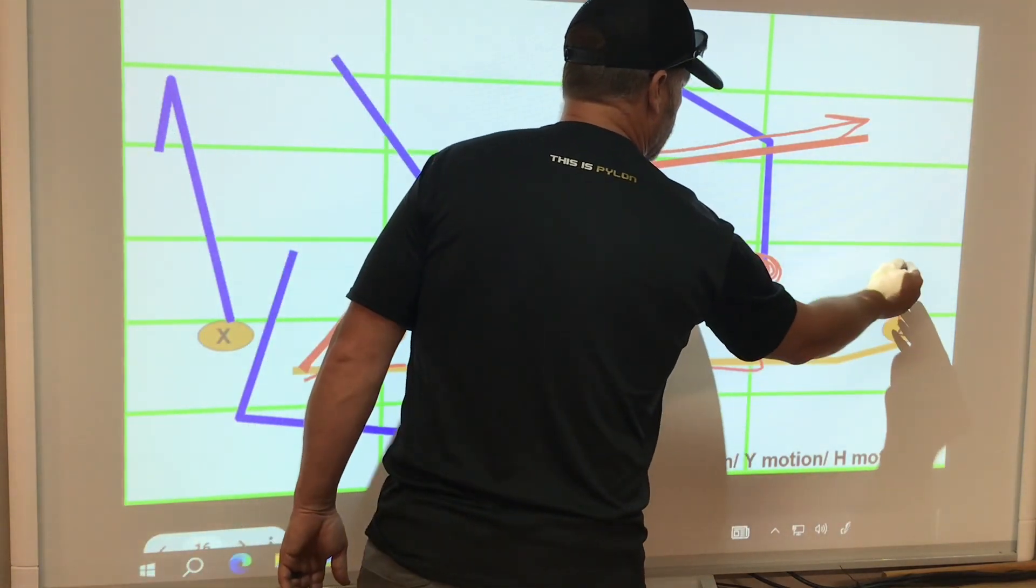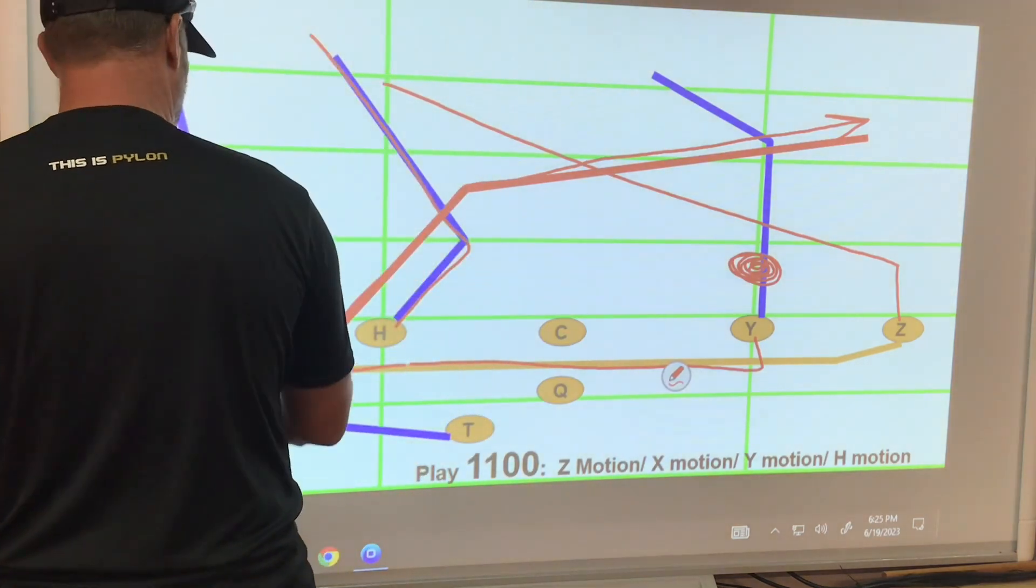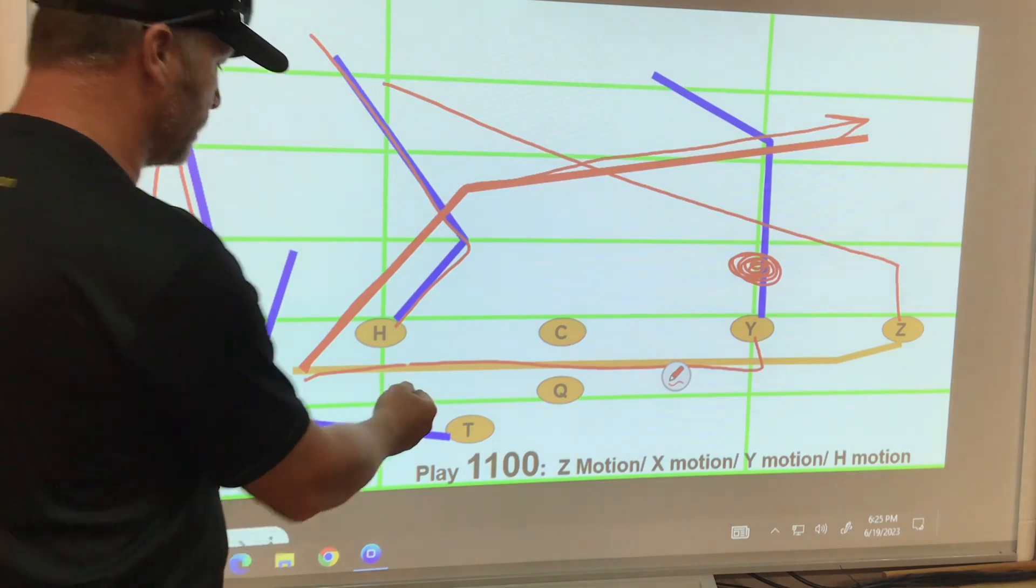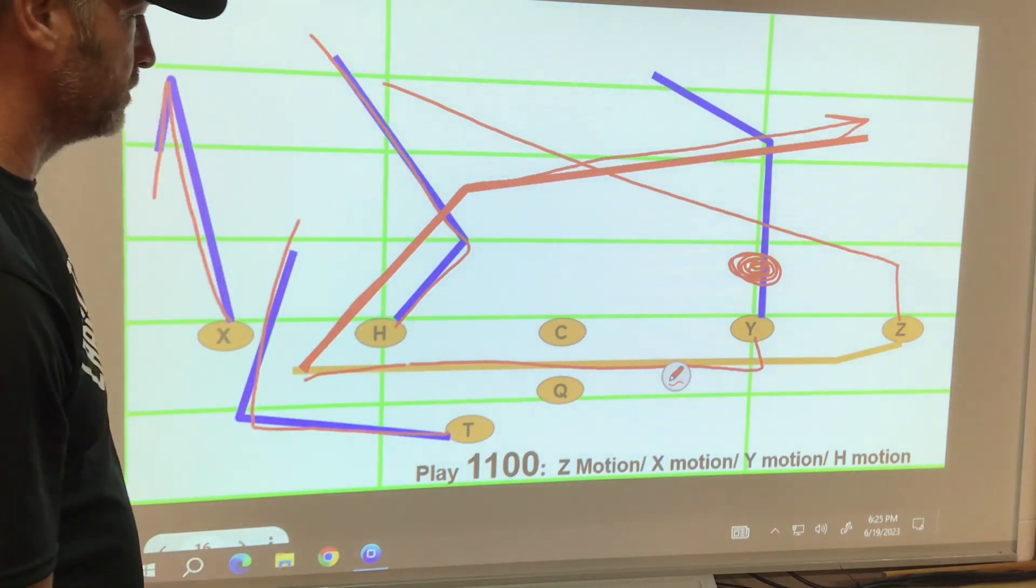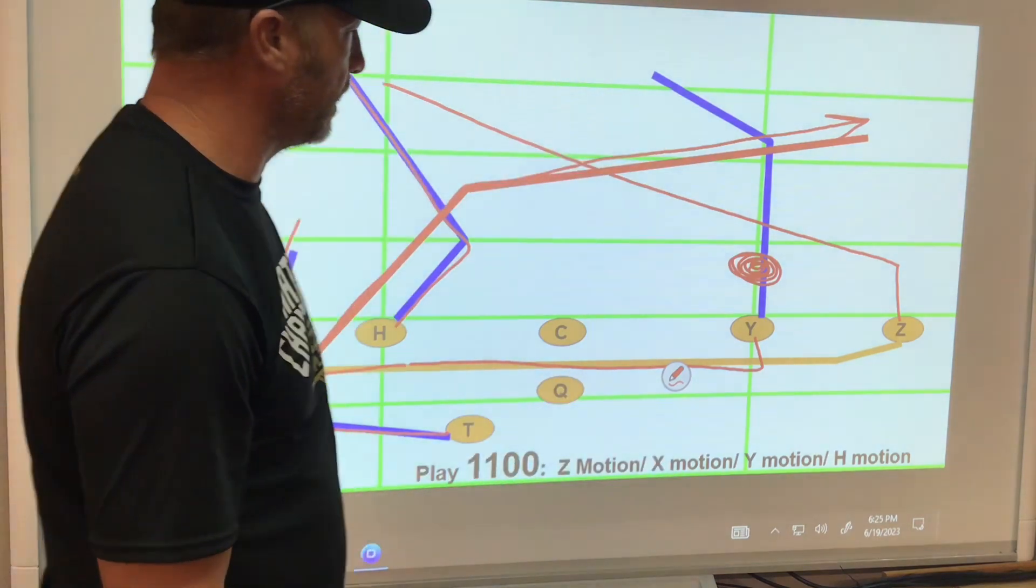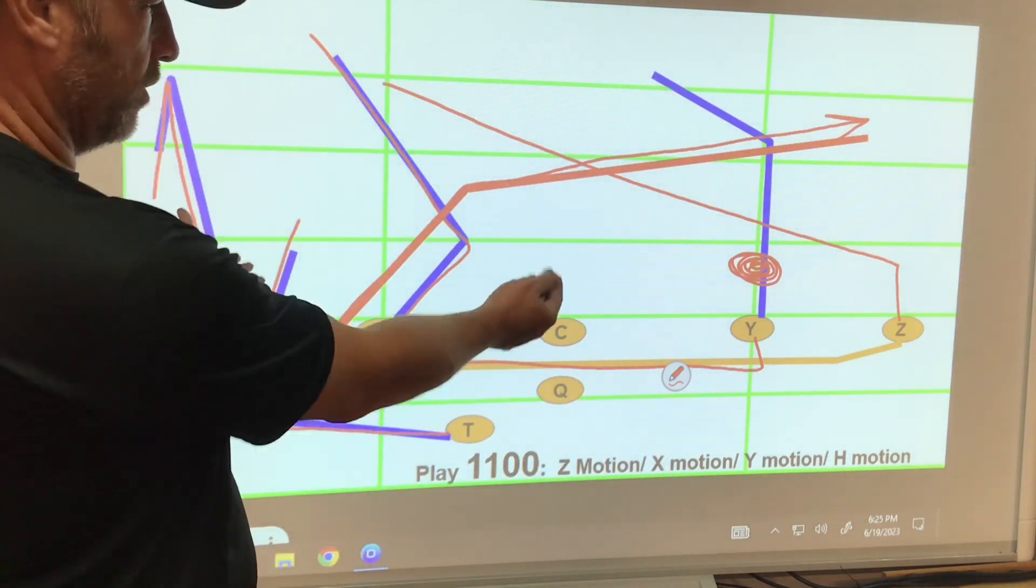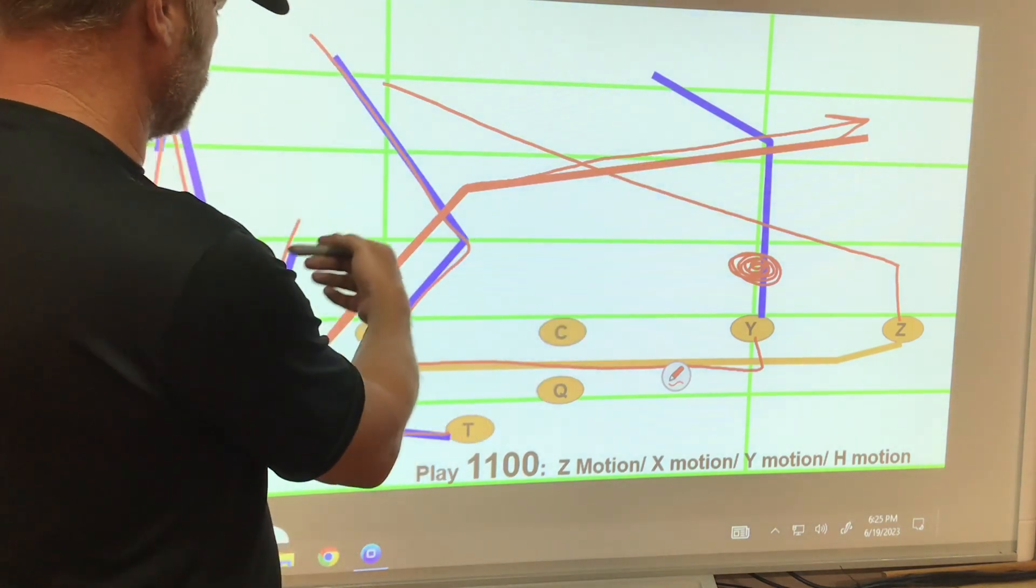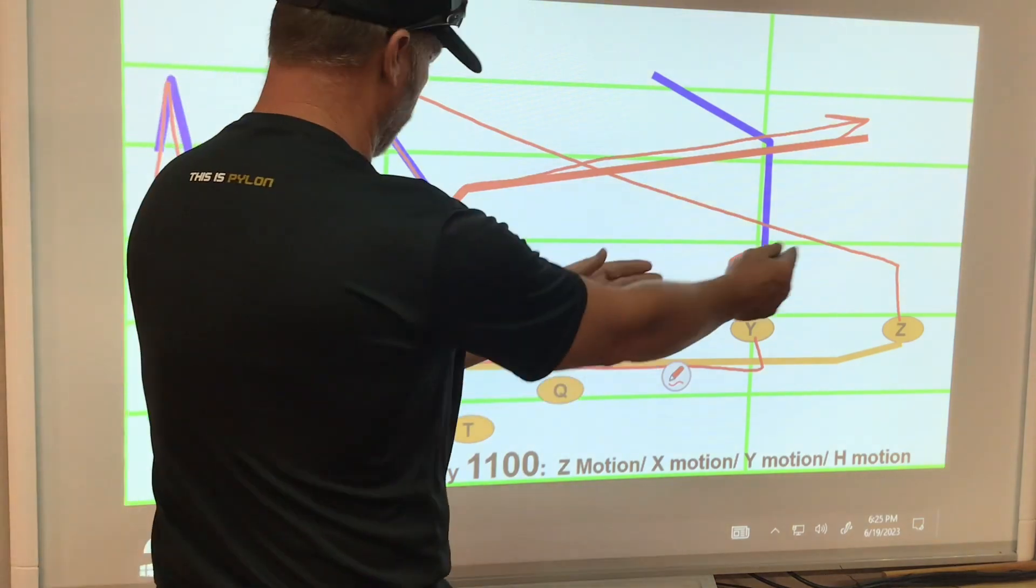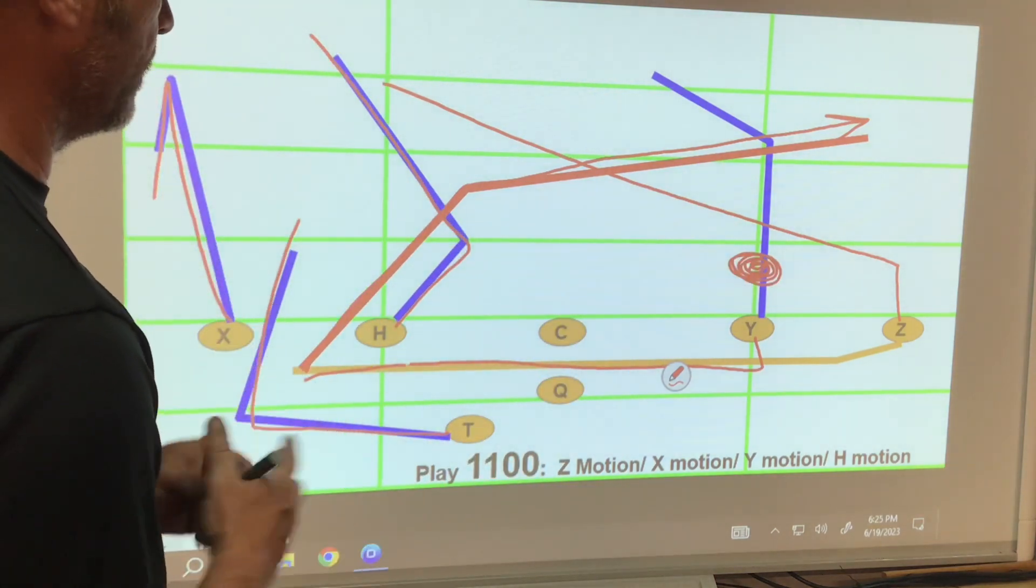So in this case, the Z would go to the left, the H would go to the left, and the X would go to the left. Even the tailback stay out of the way and go to the left. So this play 11 illustrates Z motion. Y motion would be the same, but just know you could call H motion to the right, X motion to the right, and have the same concept.